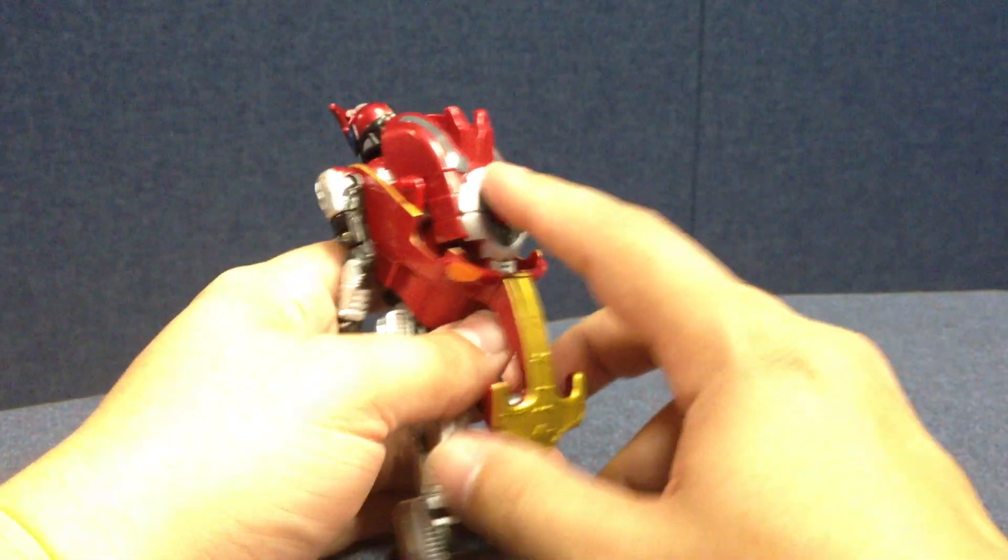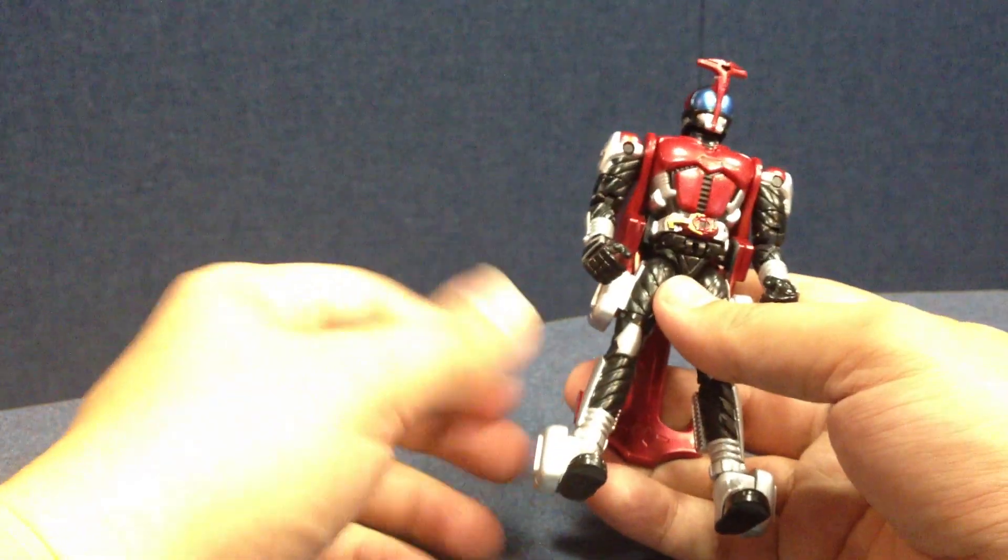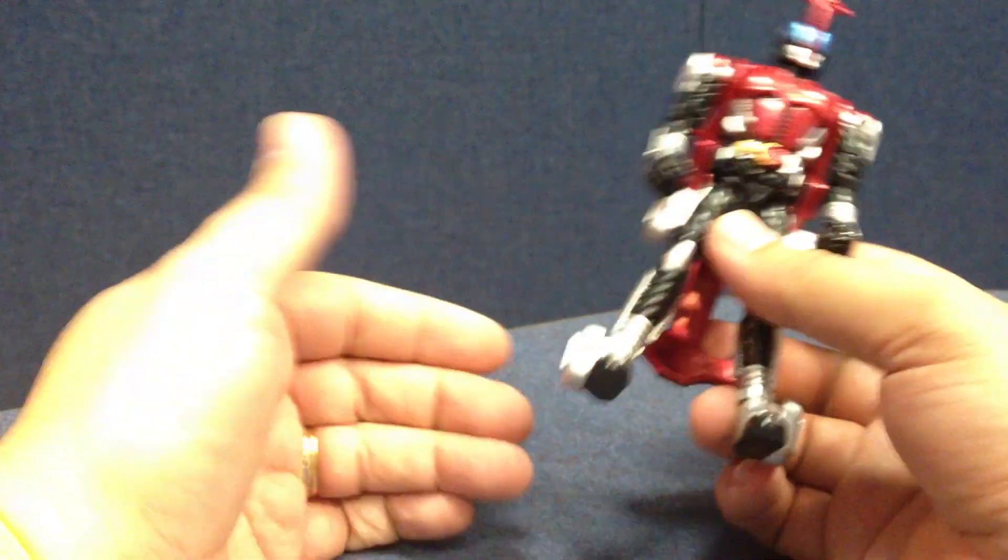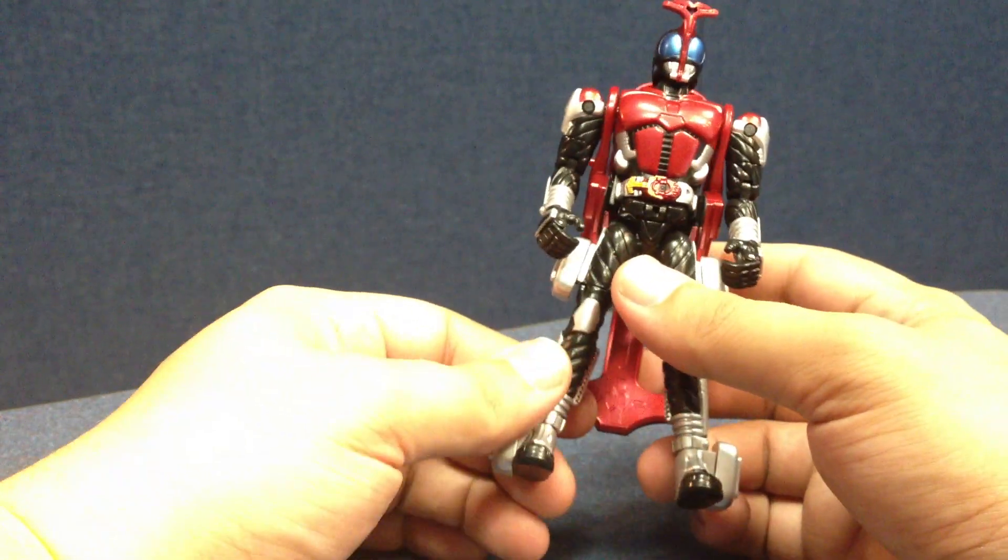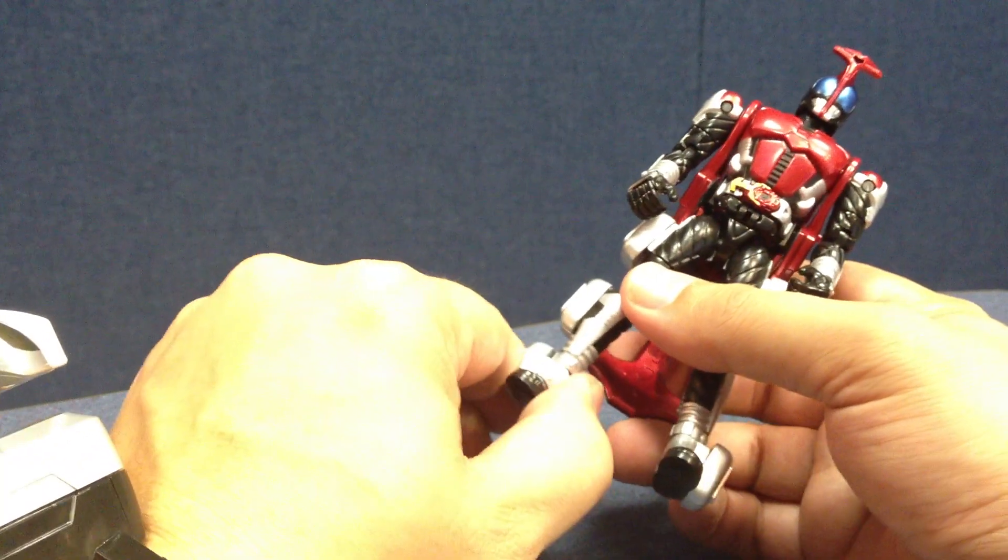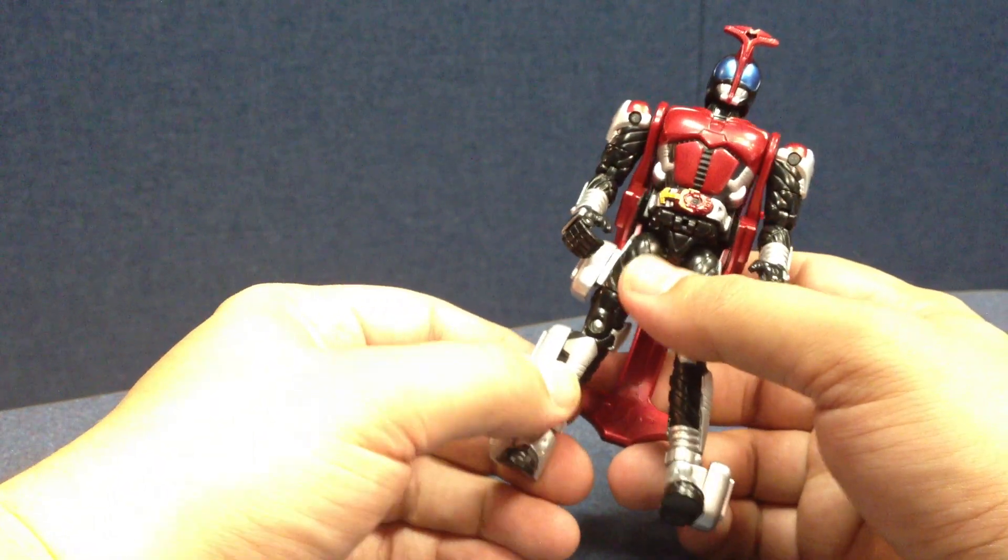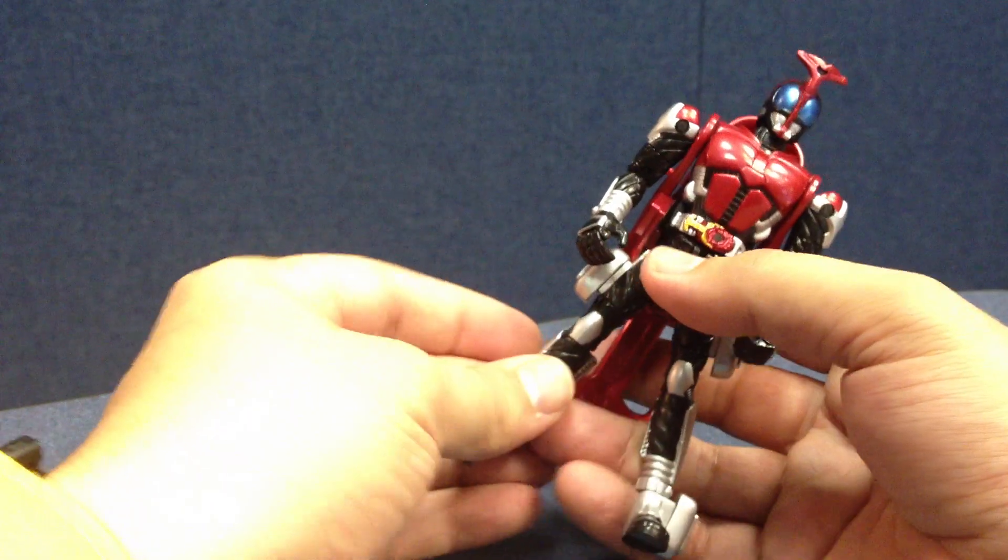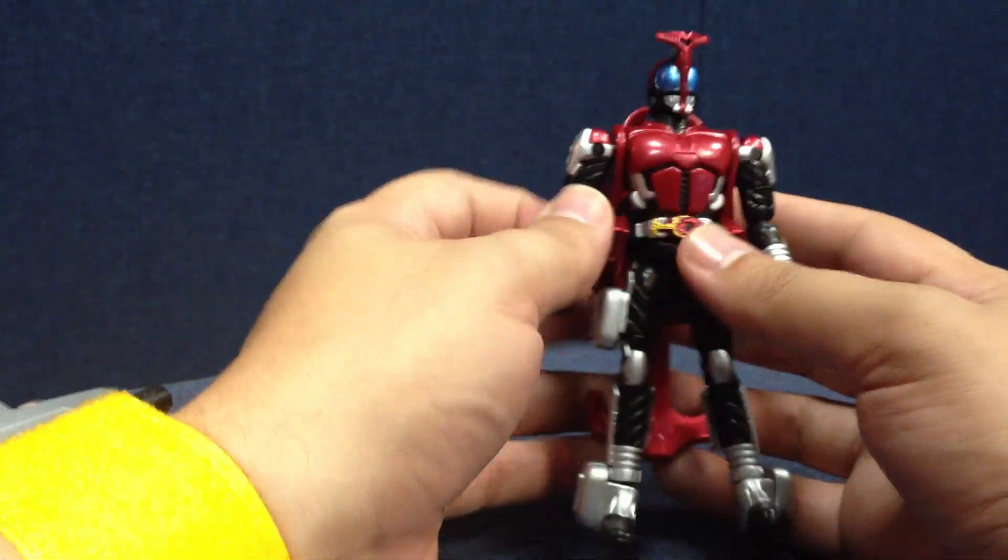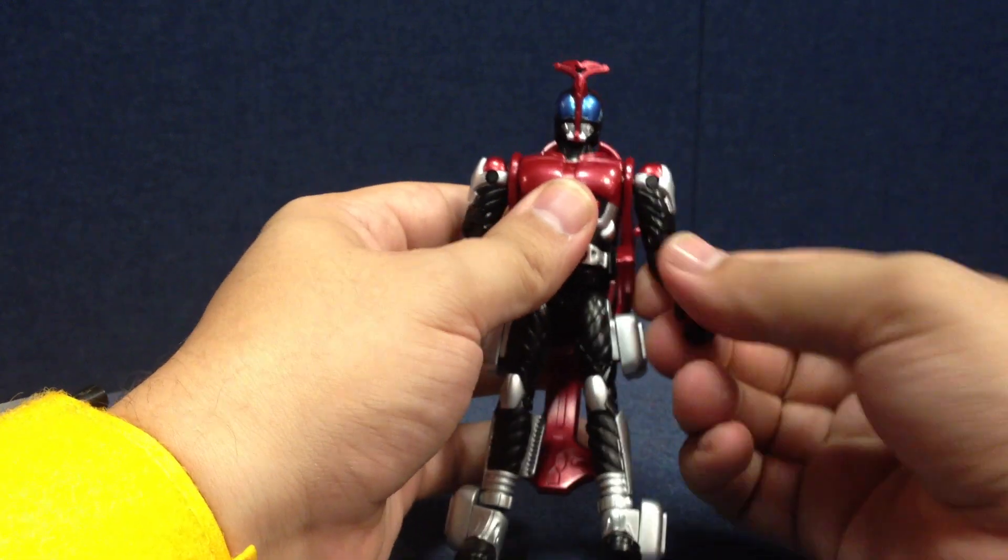This is actually from Decade, the Final Form Ride figure. He has a bunch of the older riders in it. I haven't watched Decade yet. It's on my list, but I haven't seen it yet, so I can't speak to all of the show. But apparently he can turn into other riders or summon other riders. He dimension hops between a lot of the previous dimensions and can summon them for attacks.